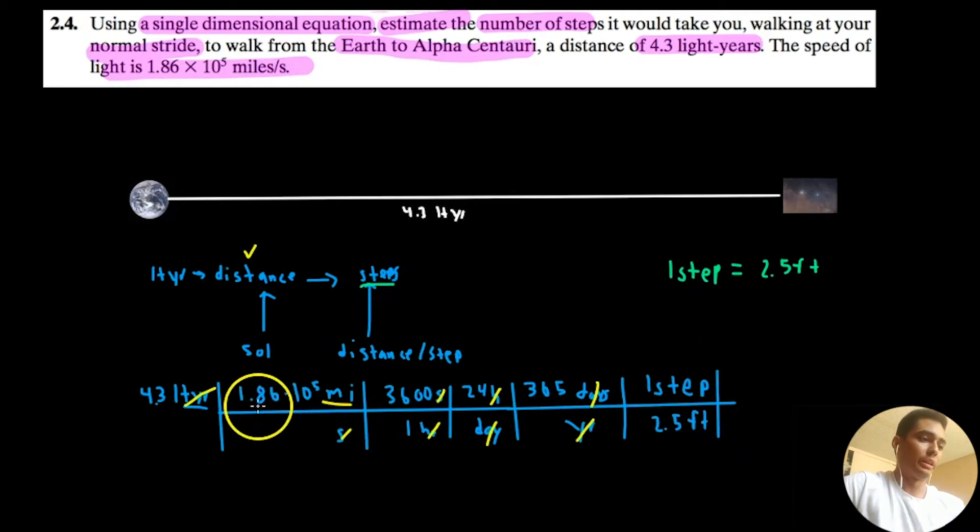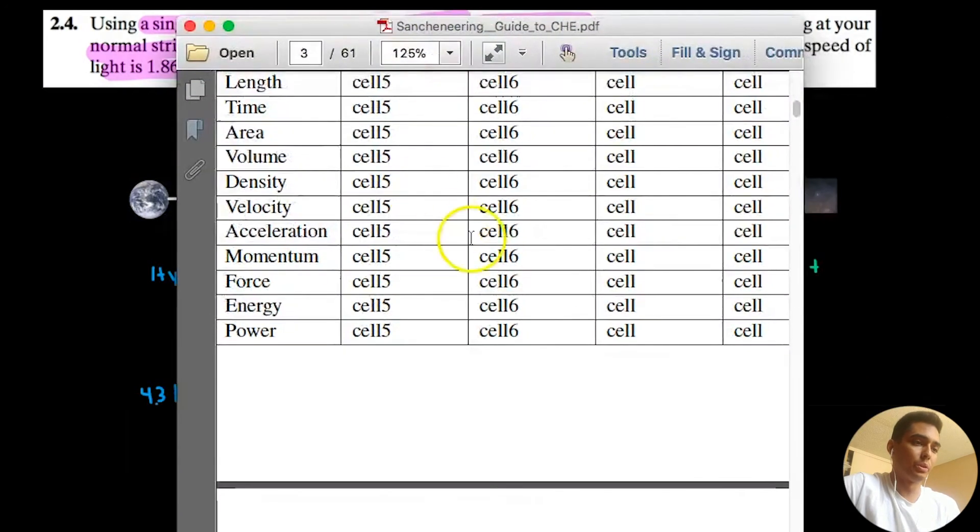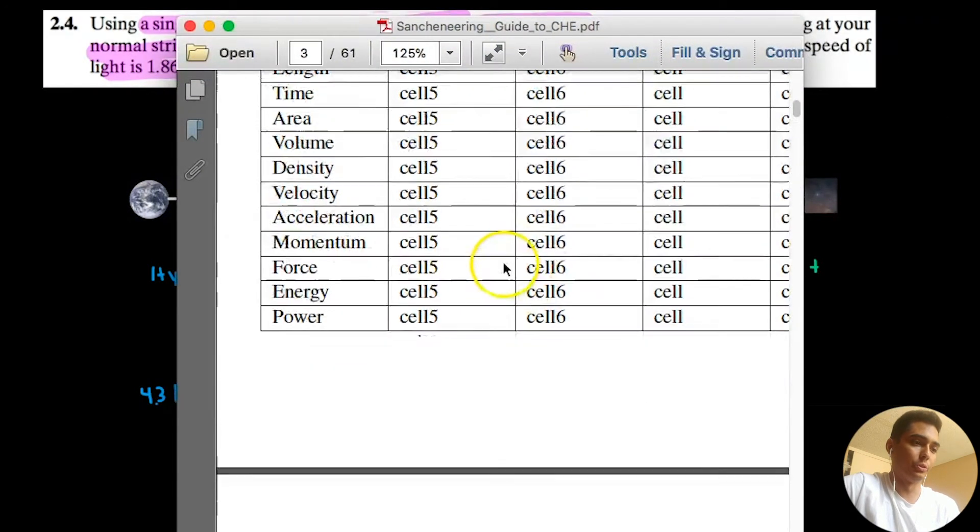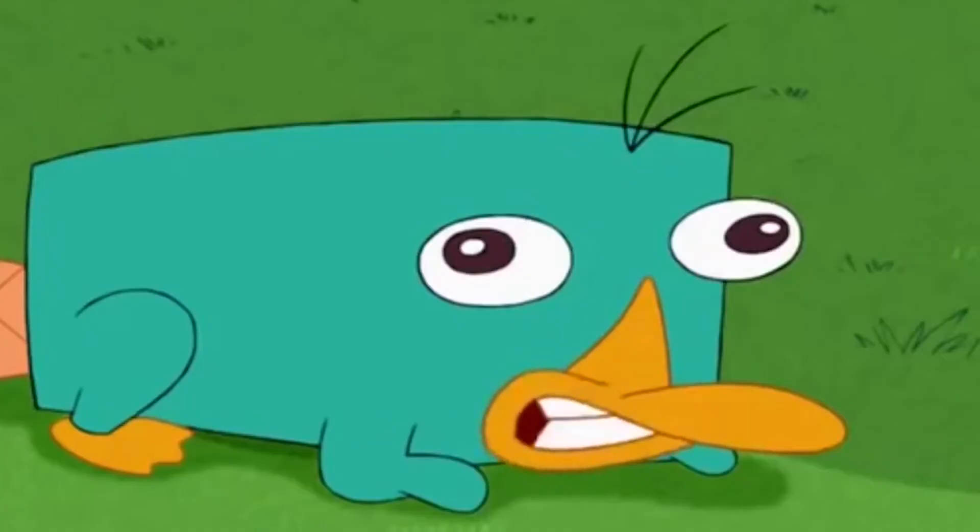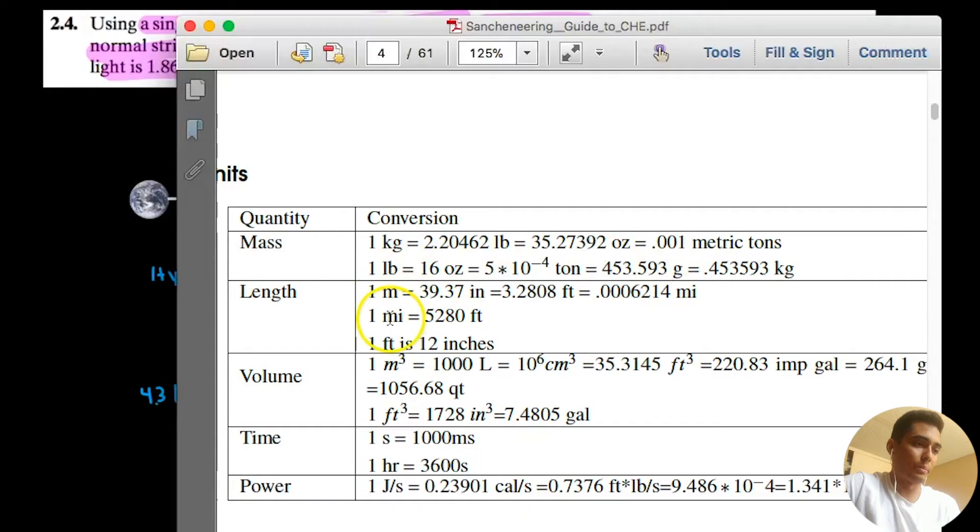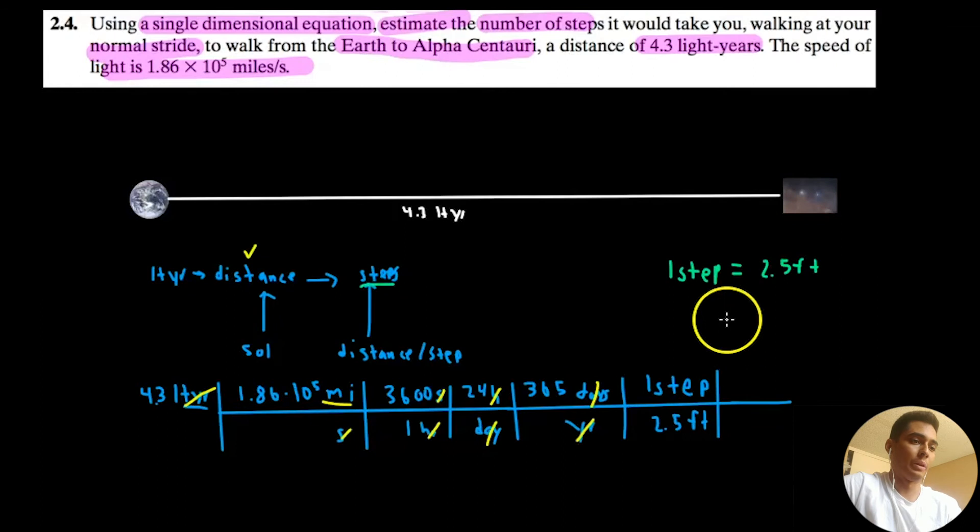All we got to do is just cancel out these miles with feet. And we know from this beautiful little table that I'm giving you, we know that the length of one mile is 5,280 feet. So, one mile is 5,280 feet. One mile cancels out. Feet cancels out. And perfect. We are left with steps.